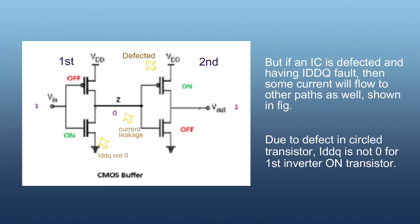But if an IC is defected and having IDDQ fault, then some current will flow to other paths as well, as shown in the figure. Due to defect in circled transistor, there is leakage in the current and it's going to first inverter ON transistor. There will be a non-zero value of IDDQ for this transistor. That's how we detect an IDDQ fault by measuring IDDQ current.